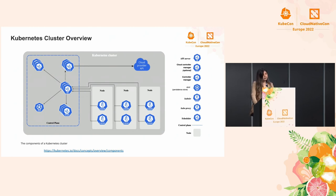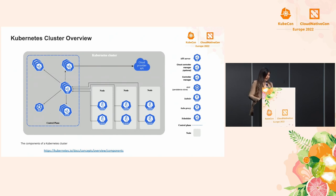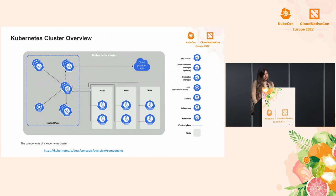On the right we have three worker nodes, which are typically where your workloads will get scheduled to run. Key components of the nodes include the kubelet, which manages containers created by Kubernetes and makes sure that your containers run in pods and come up successfully. We also have the kube proxy, which manages the network rules for your internal and external communications for your cluster.